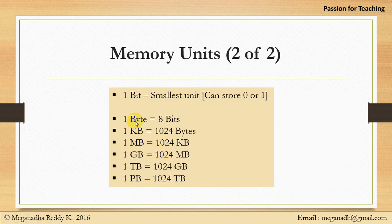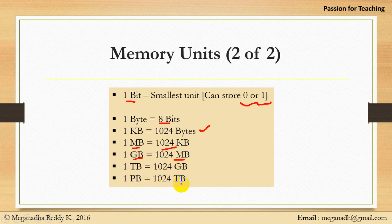The smallest memory unit is a bit. One bit can store either 0 or 1 in binary format. One byte is equal to 8 bits, one kilobyte is equal to 1024 bytes, one megabyte equals 1024 kilobytes, one gigabyte equals 1024 megabytes, and then terabyte. Nowadays computers come with 1 or 2 terabyte hard disks, which is very huge space.